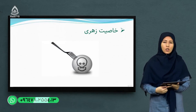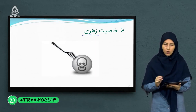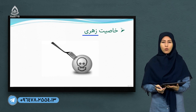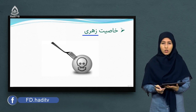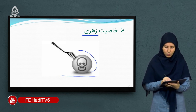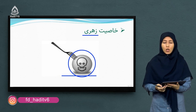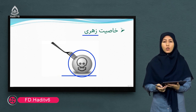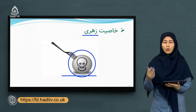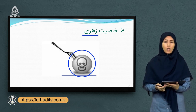بعضی از تضاب‌ها دارای خاصیت زهری یا سمی هستند که مستقیماً با آنها کار کردن بسیار خطرناک است و باید از وسایل مخصوص استفاده کنید. تضاب‌هایی که دارای خاصیت زهری می‌باشند دارای علامت خاصی بر روی بطری‌هایی هستند که محلول تضابی در آن قرار داده شده است. با مشاهده آن علامت می‌توانید شناسایی کنید که محلول مورد نظر خاصیت زهری یا سمی دارد و باید احتیاط کنید.